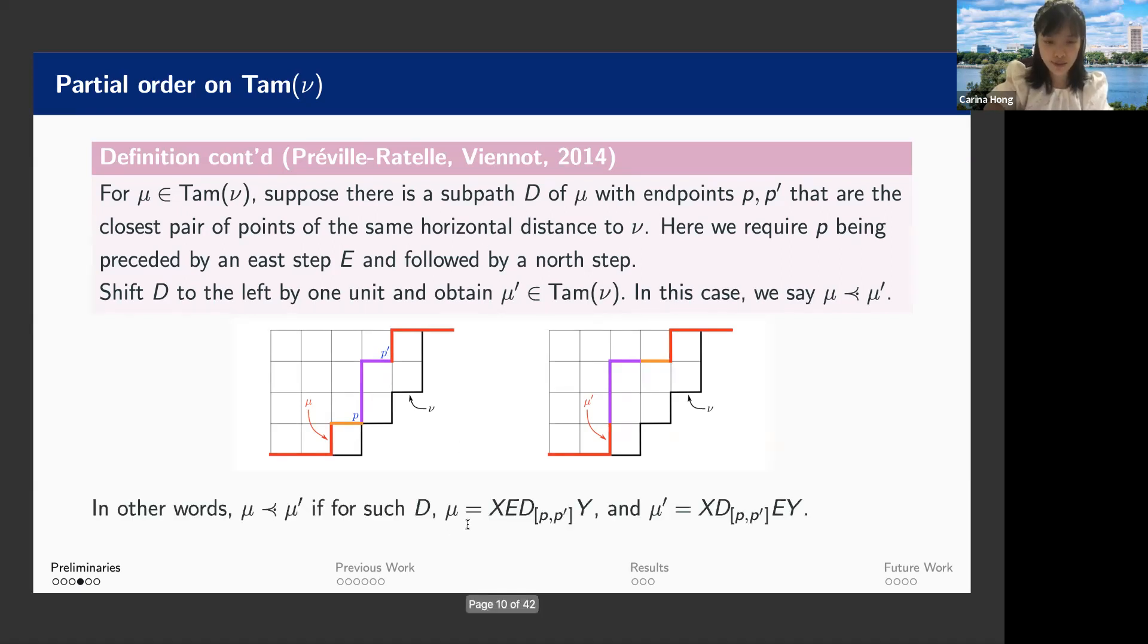And in other words, if we denote whatever that's before the east step to be x, and then whatever that's after the sub path to be y, then we say the element before the shift, the element that's smaller is x, e, d, y. And then this element after the shift that's greater than it, it's x, d, e, y. So this is another possible phrasing of the partial order.